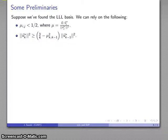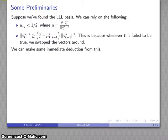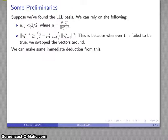The other thing we can rely on is the Lovász condition: ||V_k*||^2 is going to be greater than or equal to three quarters times ||mu_{k, k-1}||^2, and so on. We know this because whenever this failed to be true, we swapped our vectors around. So if we have found our LLL basis, we know this has to be true — because otherwise we aren't done.